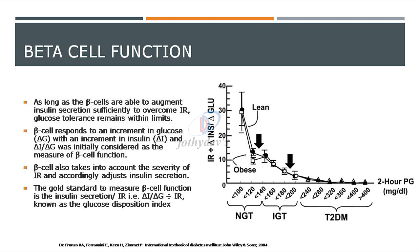As long as the beta cells are capable of augmenting insulin secretion sufficiently to overcome insulin resistance, glucose tolerance remains normal. The Delta I by Delta G ratio — the increment in insulin levels divided by the increment in glucose level — was once considered the measure of beta cell function. The beta cell also adjusts secretion based on severity of insulin resistance, and the gold standard to measure beta cell function is the glucose disposition index.